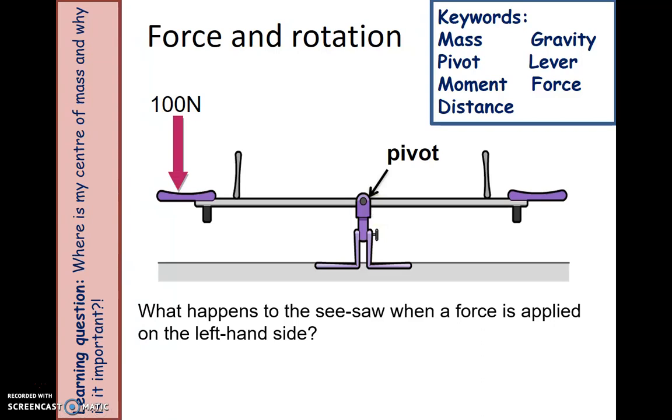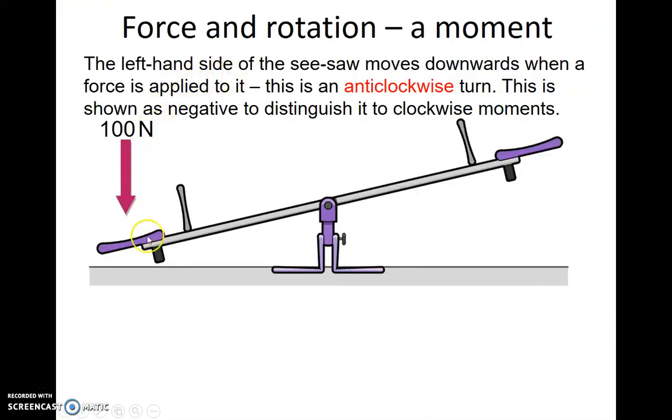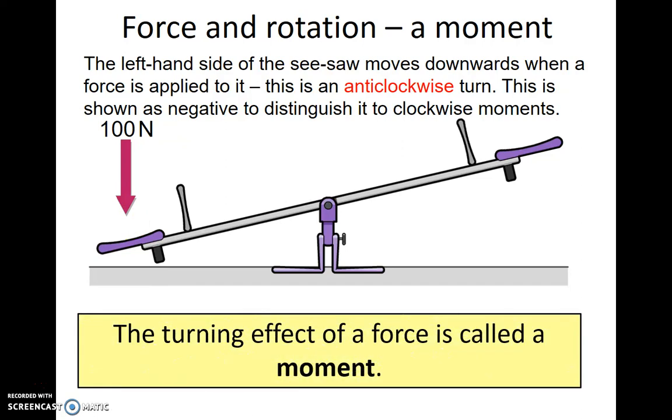What's going to happen to the left hand side? Is it going to move clockwise or anti-clockwise? In this case it moves downwards. So this is an anti-clockwise movement. If I kept on carrying round and round it would be going anti-clockwise. This is shown as negative to distinguish it from clockwise moments. When we turn something with a force, that is called a moment.